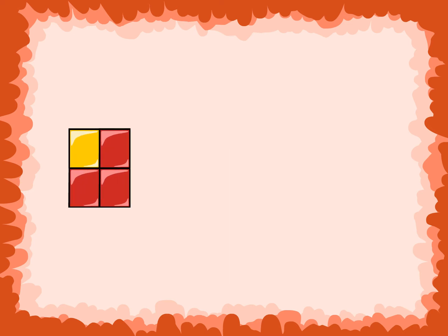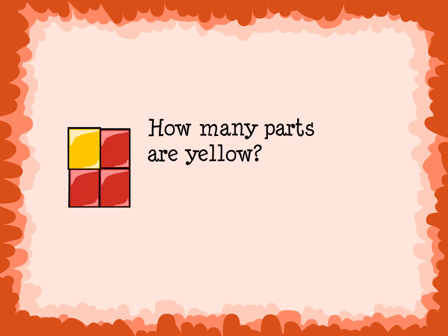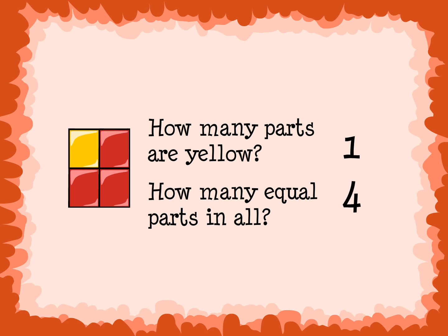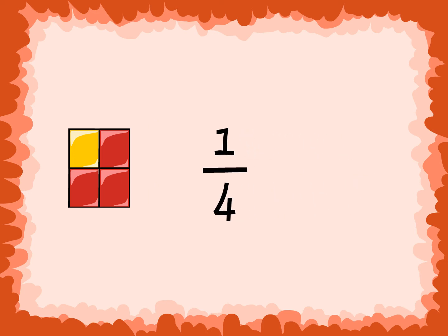Now take this rectangle. How many parts are yellow? 1 — which is the numerator. And how many equal parts are there in all? 4 — which is the denominator. What is the fraction for the yellow part of the rectangle? 1 over 4, or 1 fourth.